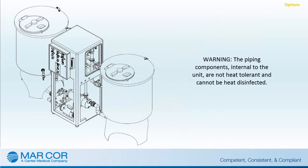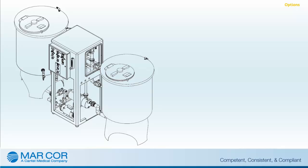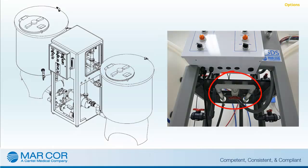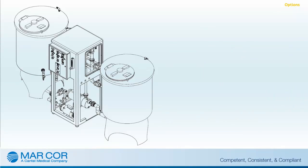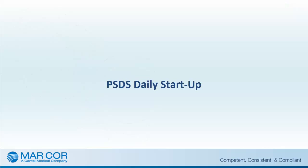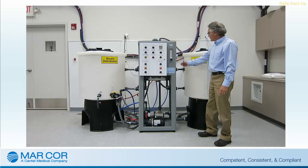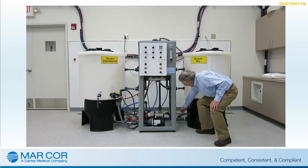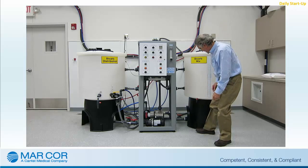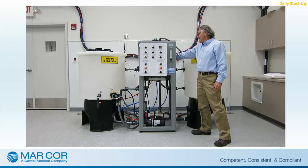Heat disinfection only applies to the RO water inlet piping loop that feeds the PSDS unit. The PSDS system cannot be heat disinfected. If the PSDS unit is equipped with PVC loop flow piping, then it is not heat disinfect compatible. The PSDS unit must be equipped with PVDF loop flow piping in order to have this option. When performing RO loop piping heat disinfection, close the RO supply water shutoff valve to the PSDS unit. Detailed step-by-step instructions for daily operation of the PSDS are included in Chapter 3, the System Operation Chapter of the PSDS Operation and Maintenance Manual.